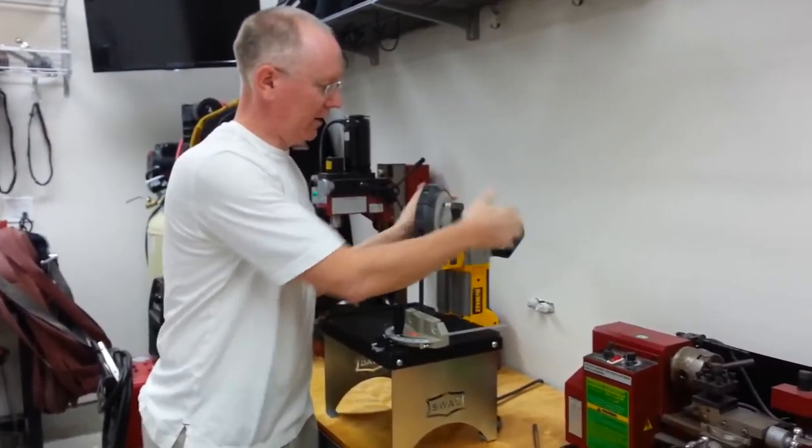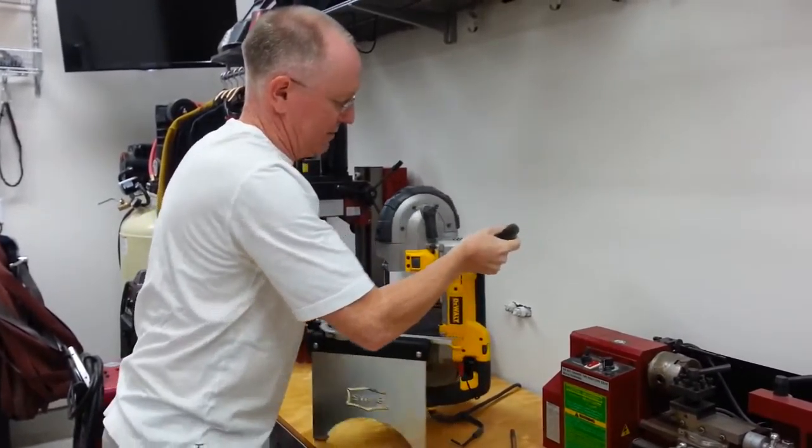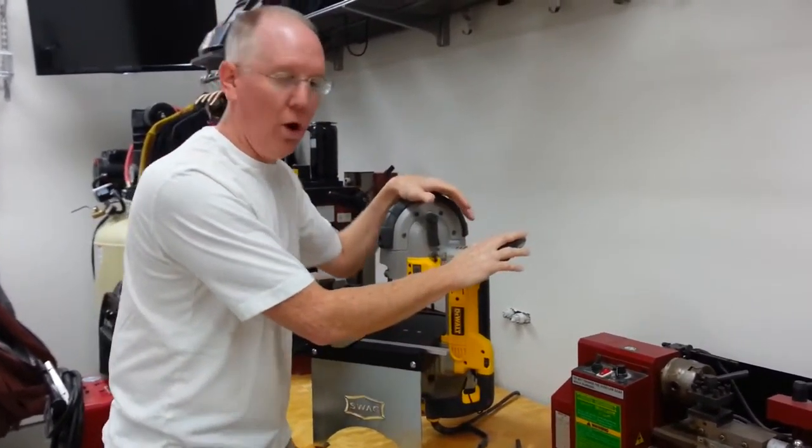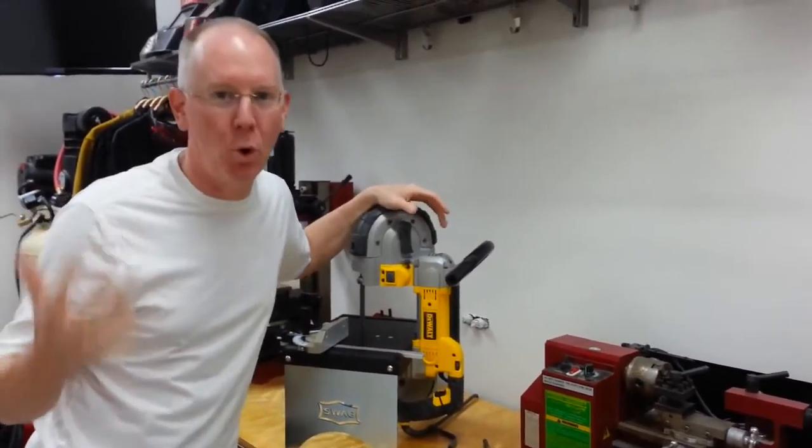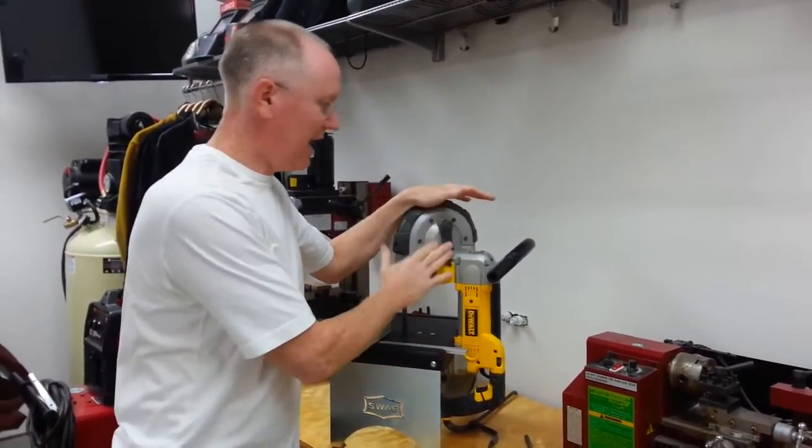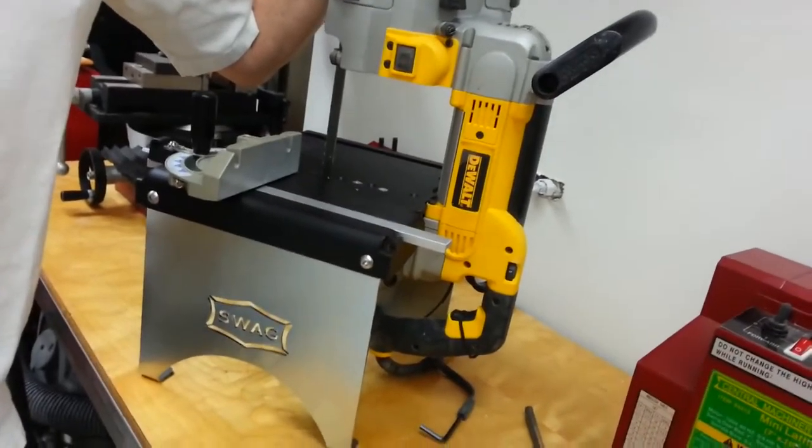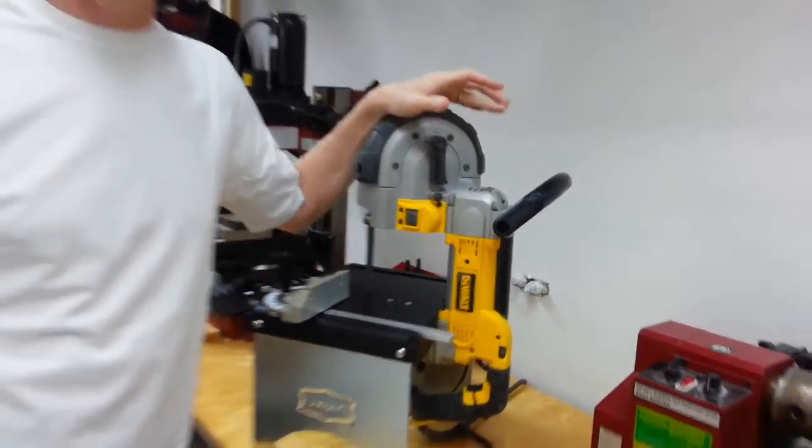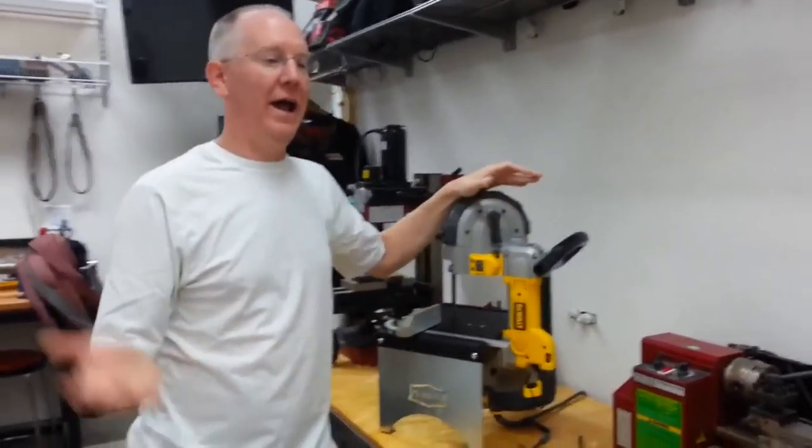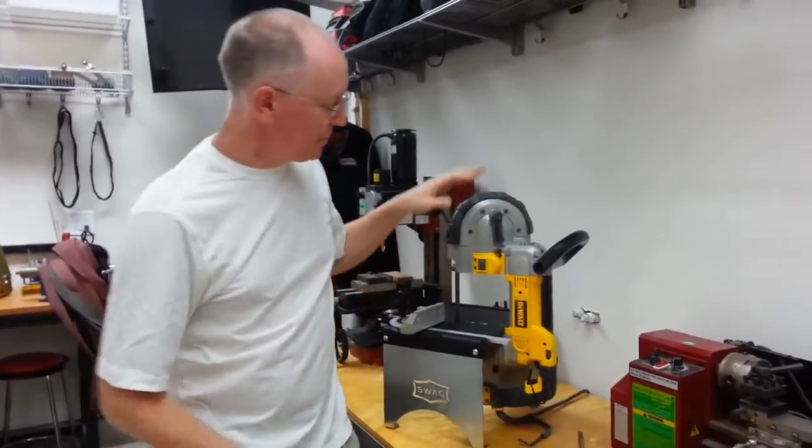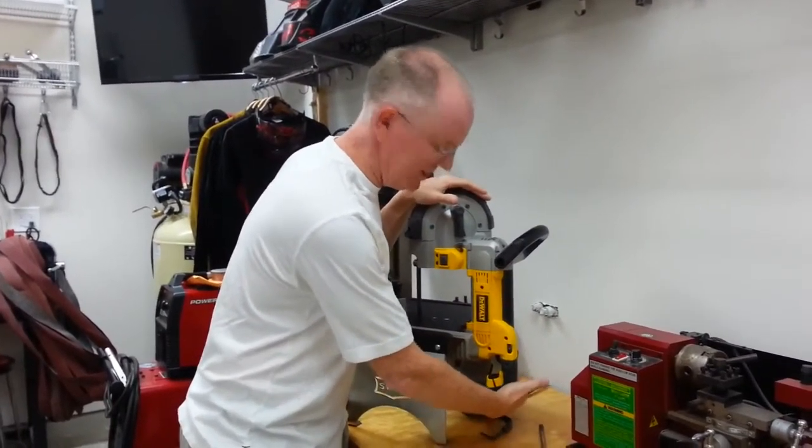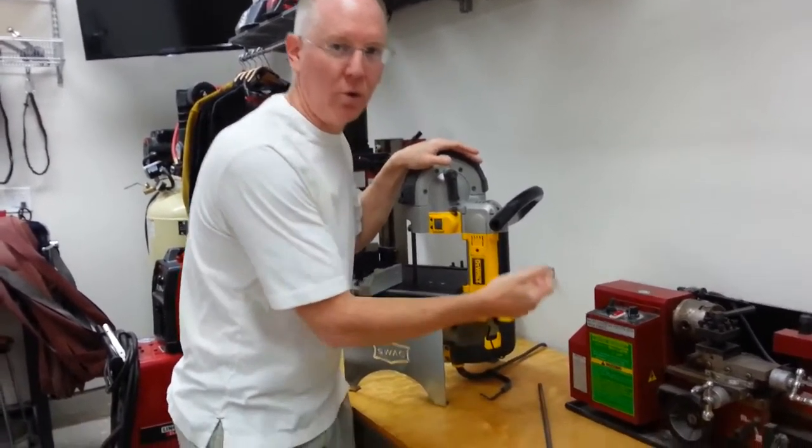This part right here, this big yellow piece, this is a DeWalt metal cutting portable bandsaw. So it's designed specifically, let's say we had an old metal fence or gate or something outside and we wanted to go out there and we needed to cut some of it off. Well this thing has got a 110 electrical power cord.